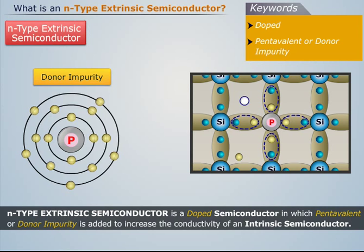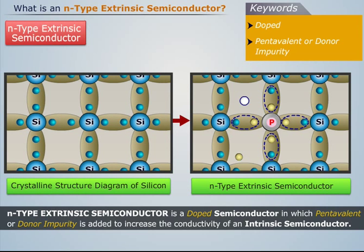Thus, an intrinsic semiconductor gets transformed into an N-type extrinsic semiconductor.